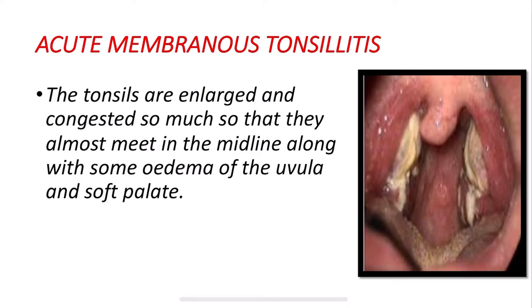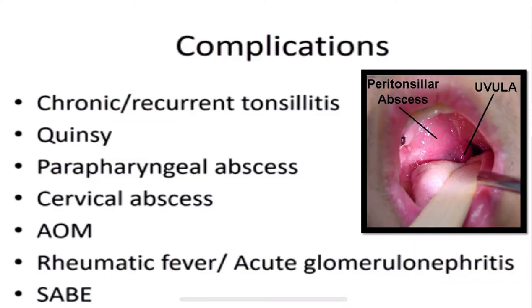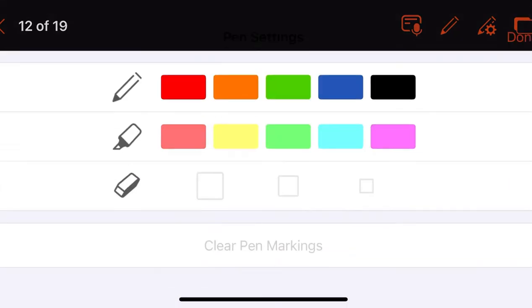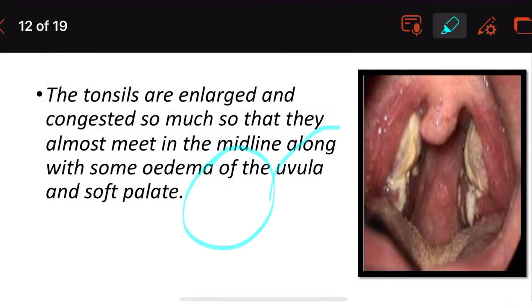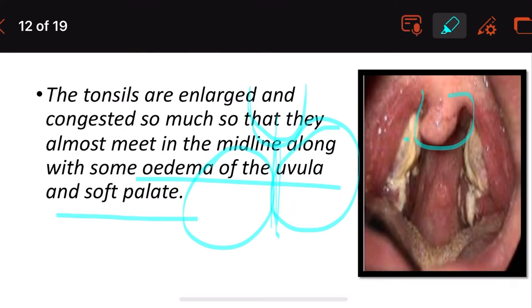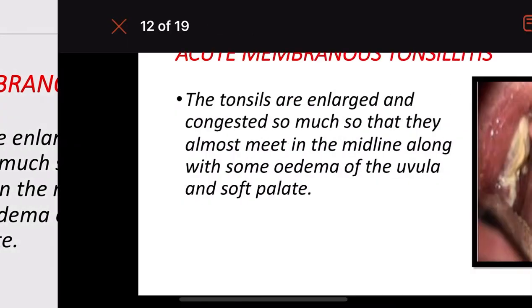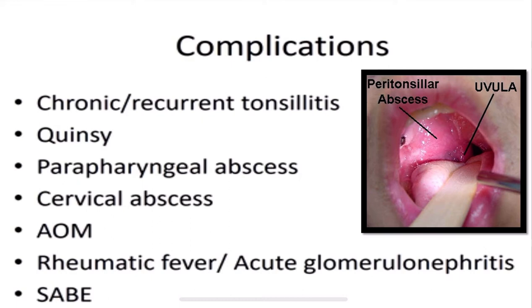In acute membranous tonsillitis, the tonsils are so enlarged and congested that they almost meet in the midline. There is also edema of the uvula and soft palate, and the two tonsils are swollen to such an extent that there is no differentiation between them.